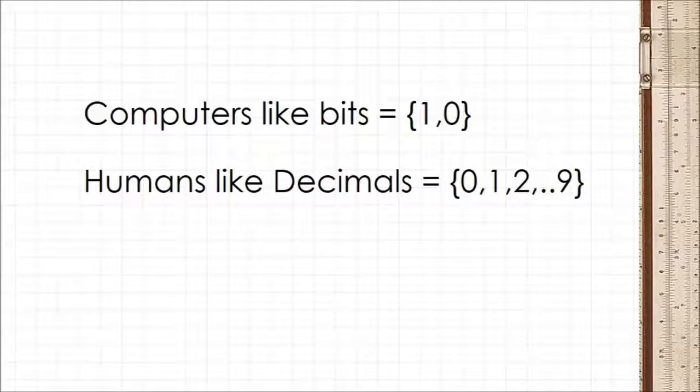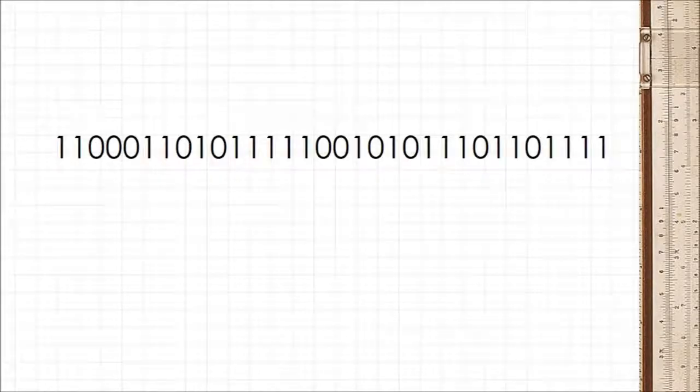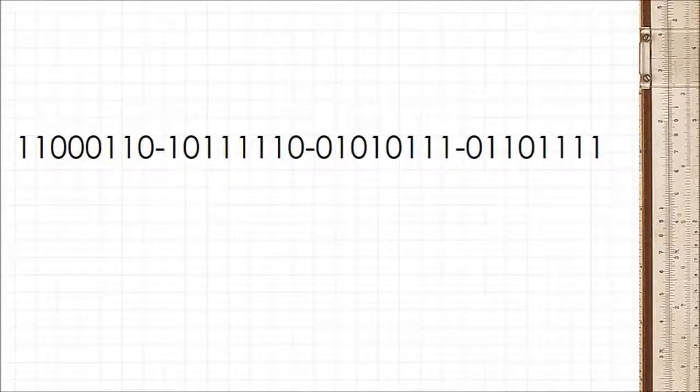So computer geeks the world over decided to invent the octet system, where the string of 32 bits is divided into 4 octets, and each octet is 8 bits long.